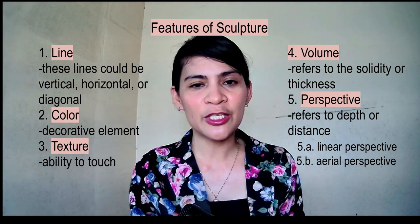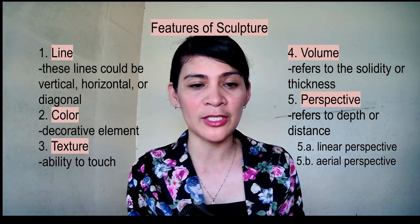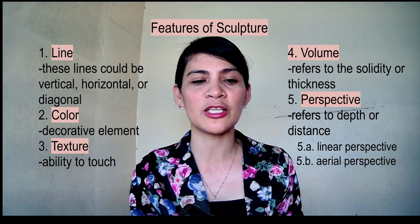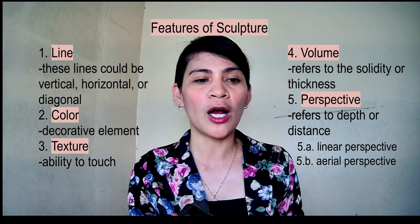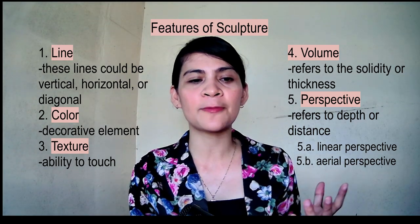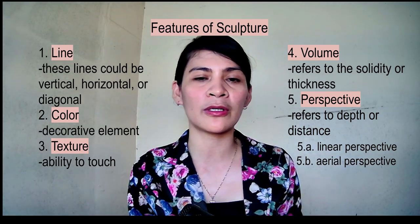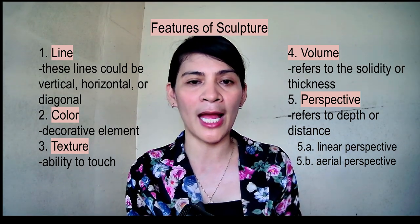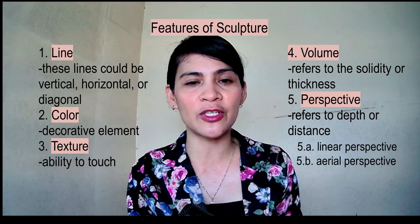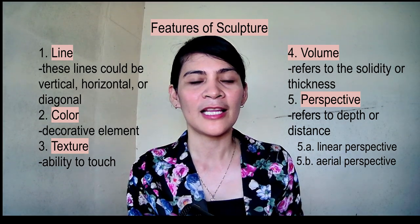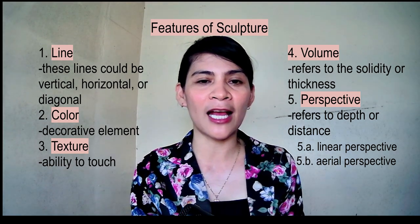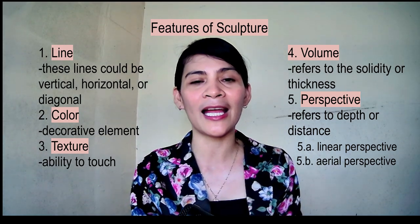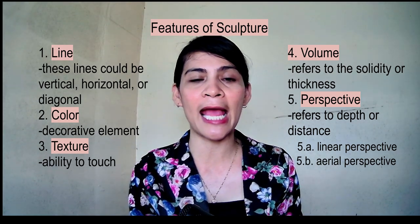The third feature of sculpture is texture. Texture is our ability to touch a certain object, and this is very important in sculpture because it involves pieces which could be felt within our hands. You can feel and touch the texture of a sculpture. That's why when making a statue, you need to carefully consider the line, the color, and the texture.